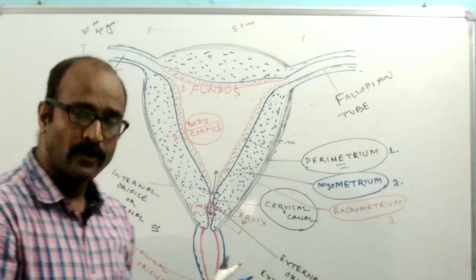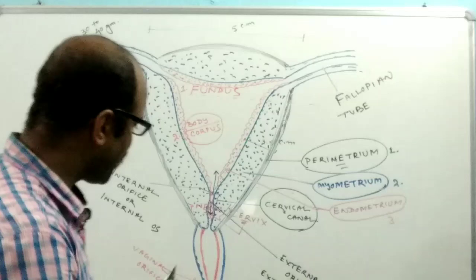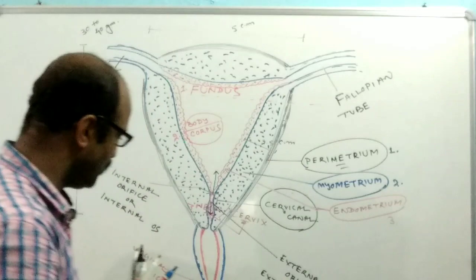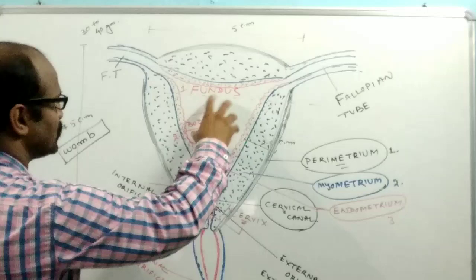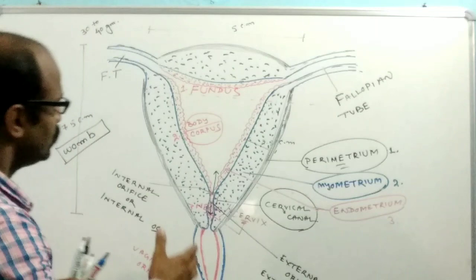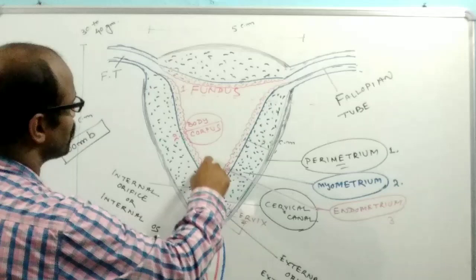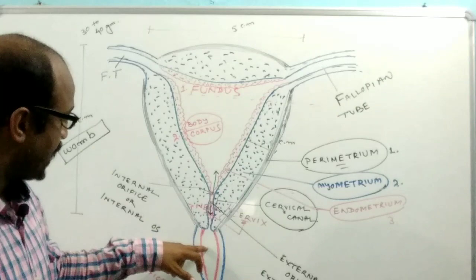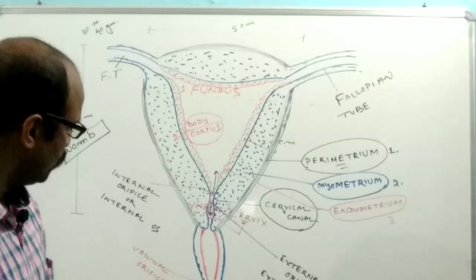The vaginal canal acts as the birth canal at the time of delivery when the baby comes out through the vaginal opening. The vagina is also known as the birth canal. During the menstrual cycle, menstrual flow passes through the vaginal canal. The vagina accommodates the penis during intercourse and serves as the passage for menstrual flow.